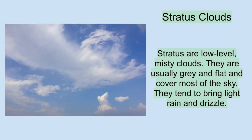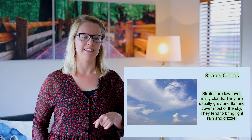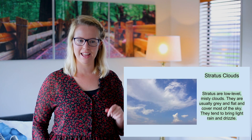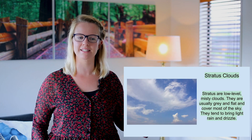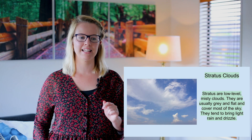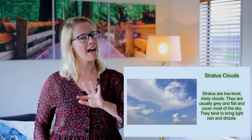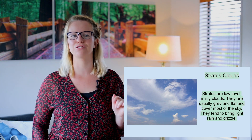Then we have stratus clouds. Stratus are low level misty clouds. They are usually grey and flat and cover most of the sky. They tend to bring light rain and drizzle.